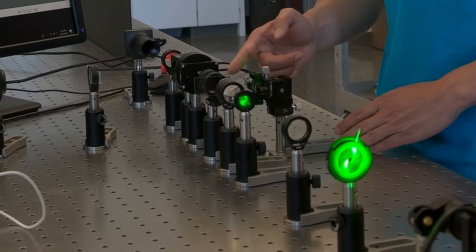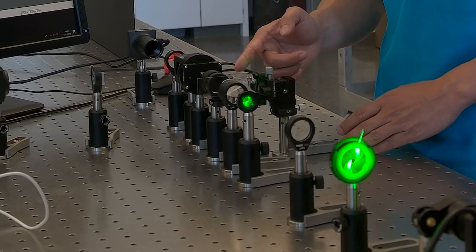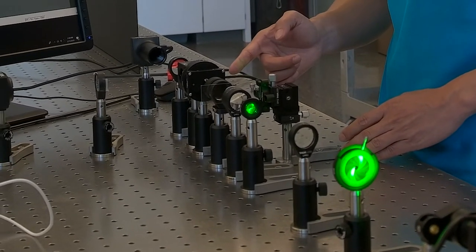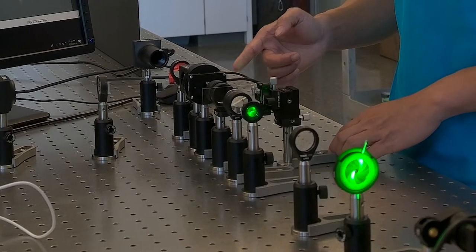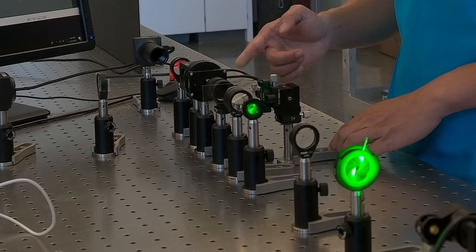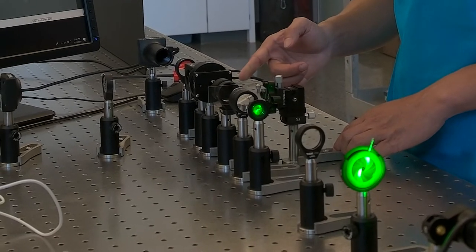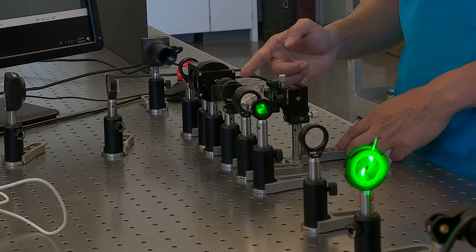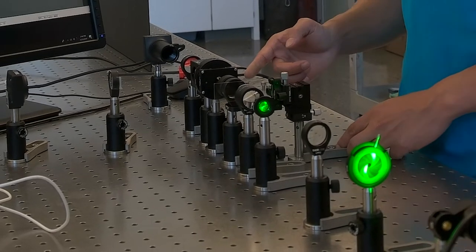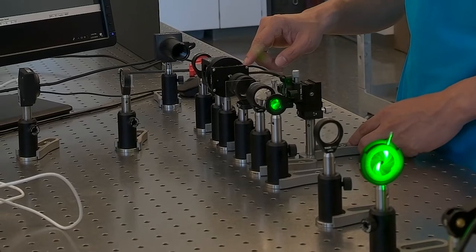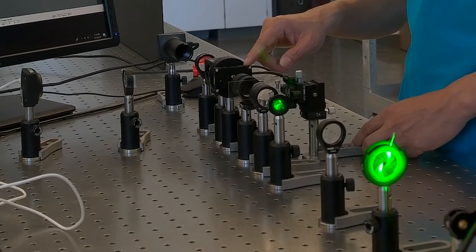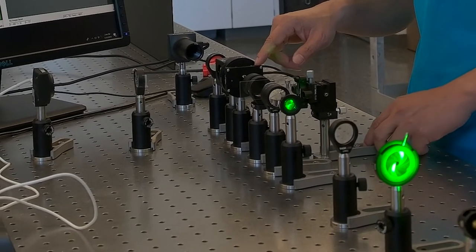This is the objective, which is a simple convex lens, and this is adjustable slits, which is positioned at the back aperture of the objective lens. And this is also where the Fourier plane is. We are going to use this adjustable slit to manipulate light at the Fourier plane later in the video.